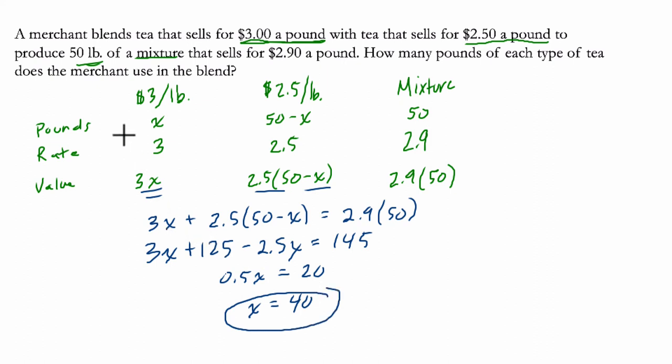Okay. So that means we need 40 pounds of our $3 a pound tea, and then 10 pounds of 50 minus 40 with $2.50 tea. And that would give us a tea mixture that costs $2.90 per pound. And incidentally, my example from earlier actually is the answer. All right. Hope this helps.